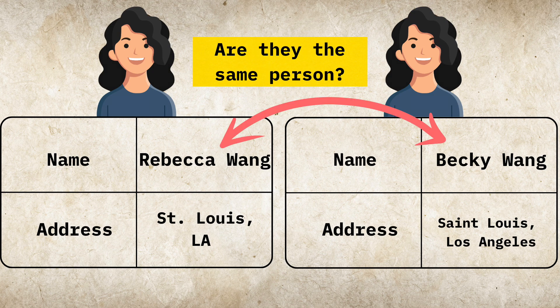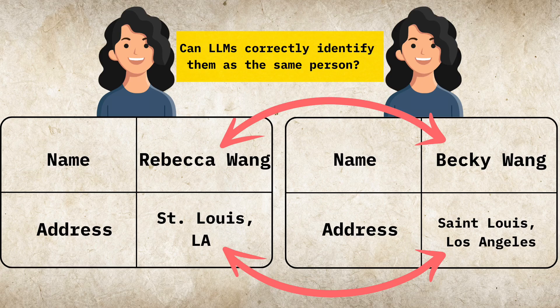Here you can see the example where Rebecca and Becky refer to the same person, even if they appear under slightly different names in address formats. Effective entity resolution is important to make sure that knowledge graphs are consistent and correctly represent the same individuals or objects across various sources.